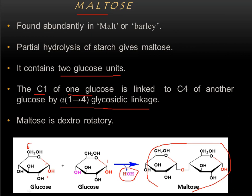The C1 carbon of one glucose is where the functional group is present, and the C4 carbon of another glucose unit is the second carbon involved. The functional group is not present at C4 but is present at C1. A glycosidic bond is formed by the removal of a water molecule — this is the alpha 1-4 glycosidic linkage, as the sugar is present in the alpha configuration, meaning the hydroxyl group of the functional carbon is present below the plane of the ring.